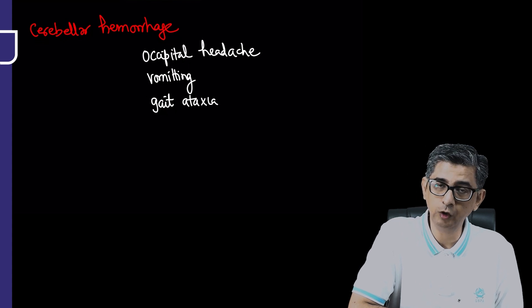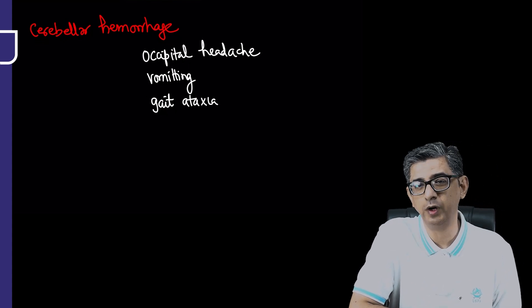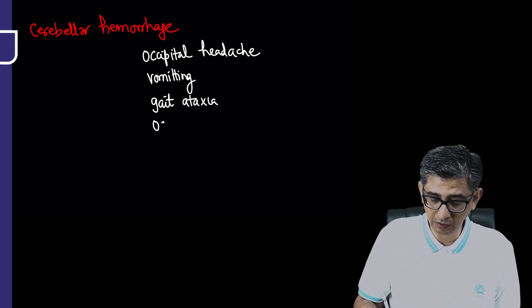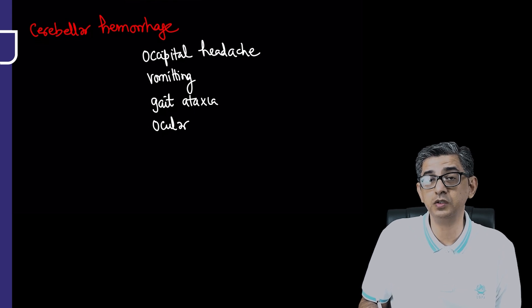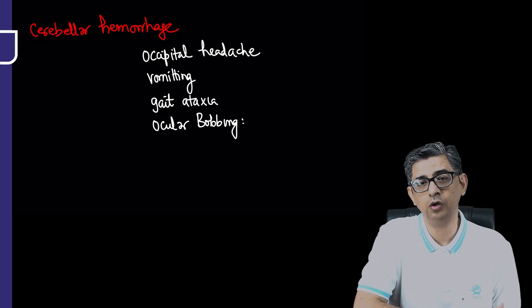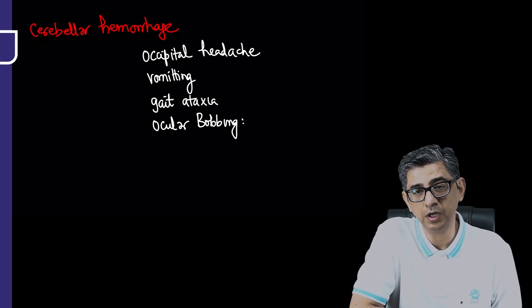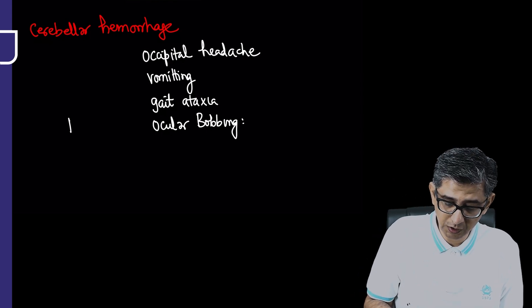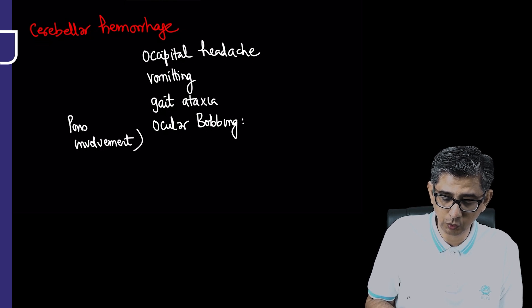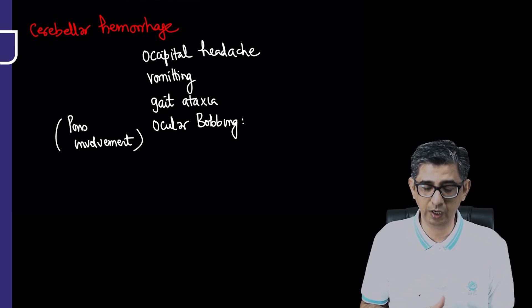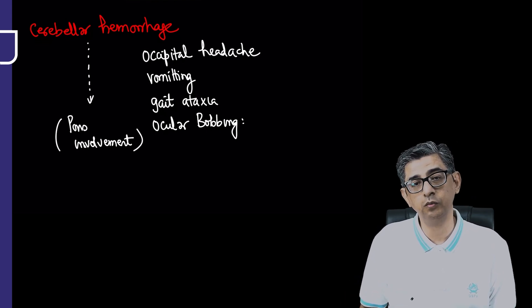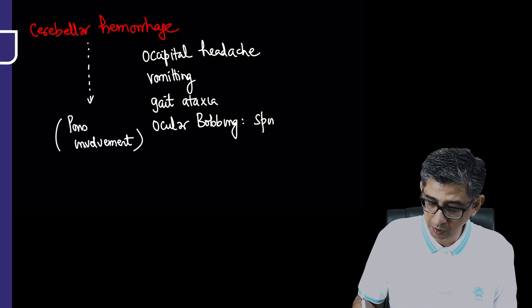He was standing giving a PowerPoint presentation and started having gait ataxia. The gait was so bad he was deviating to one side. Someone offered him a chair. You're noticing involuntary eye movements. As a doctor, you understand cerebellar hemorrhage can have pontine involvement if there's pons involvement, because cerebellum is just posterior to the brainstem. As the cerebellar hematoma expands, pons involvement occurs, resulting in ocular bobbing.